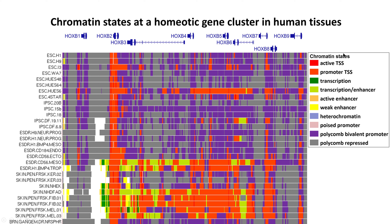Looking across the HoxB cluster in stem cells like embryonic stem cell lines or induced pluripotent stem (IPS) cell lines — these are pluripotent stem cells before embryogenesis has begun, so body patterning decisions haven't been made on these HoxB genes yet. They've got to listen. You'll see a lot of bivalent signature across these genes, across their promoters and regulatory elements — a lot of purple. That bivalent state means these genes are expressed at a very low level and they're listening, waiting for signals to tell them what to do.